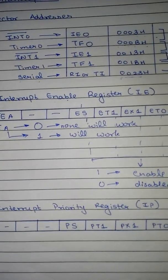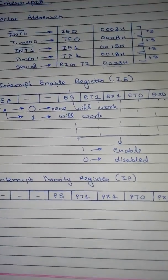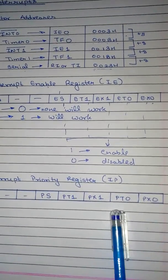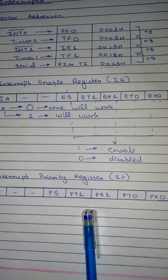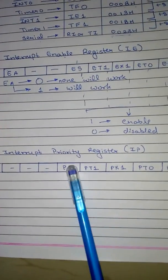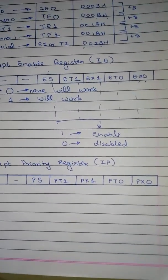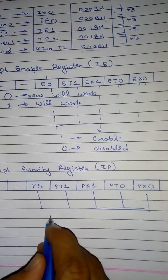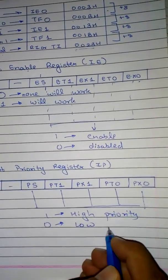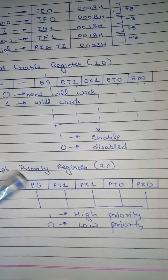Now let's talk about the Interrupt Priority Register. By the same analogy as the vector addresses, you can remember this easily: PX0 represents INT0 bar, PT0 represents Timer 0, PX1 represents INT1 bar, PT1 represents Timer 1, and PS represents serial. The 'P' stands for priority. If any of these bits is one, it means that interrupt has high priority. If it is zero, it means low priority.